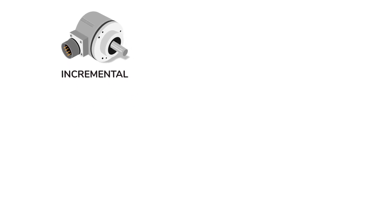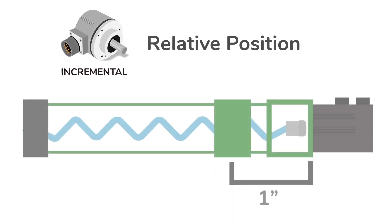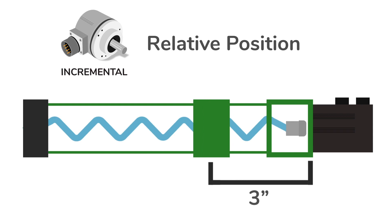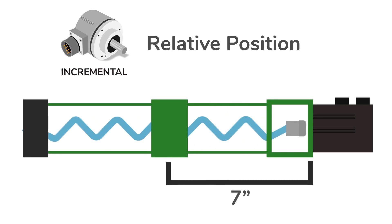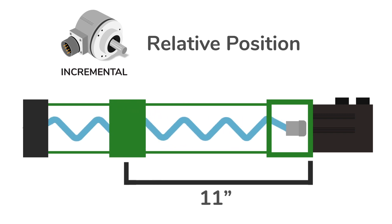Incremental encoders determine relative position. Simple and inexpensive, these encoders are also limited as they only provide relative positional data. In the event of a planned or unplanned power outage, an incremental encoder must be recalibrated.